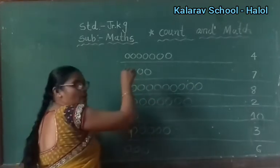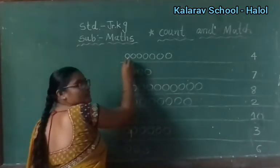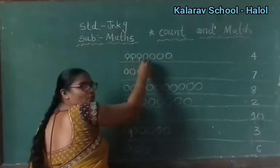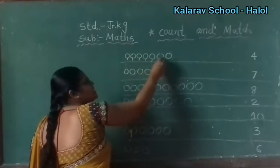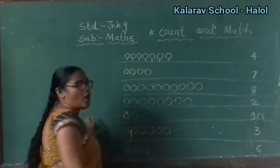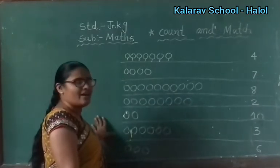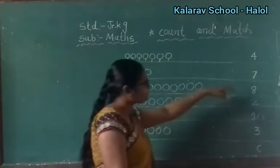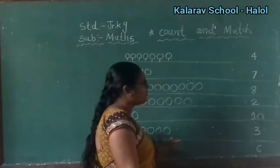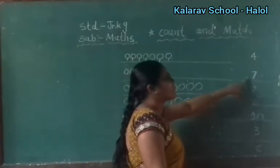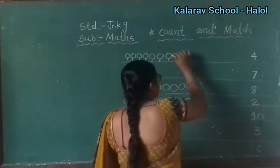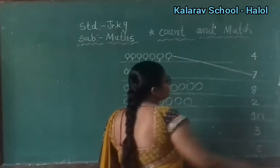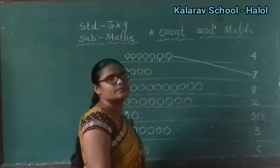Come on, let's start. You also count: 1, 2, 3, 4, 5, 6, 7. How many objects? Yes, 7. There are 7. So find out the 7 here. Where is the number 7? Yes, look here. Very good. So match — 7 circles to the number 7. Draw a line. Join.